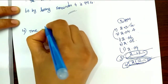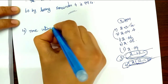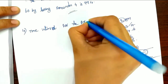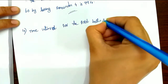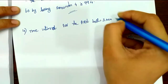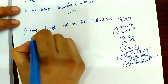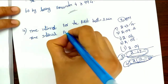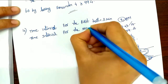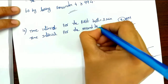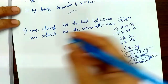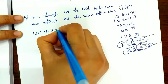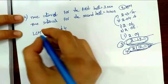Time interval for the first bell equals 3 minutes. Time interval for the second bell equals 4 minutes. We will find the LCM of 3 and 4.